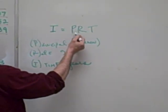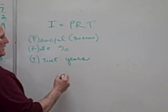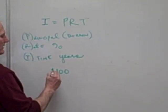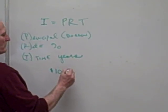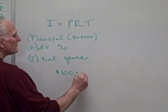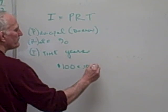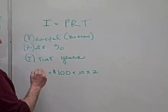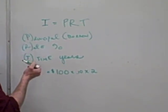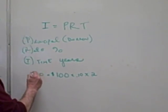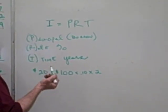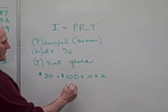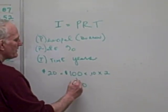I'd like to do a simple example to show you how to apply principal times rate times time. Suppose somebody borrows a hundred dollars, the interest rate is 10%, and they borrow it for two years. The amount of interest in dollars that they would pay would be $20.